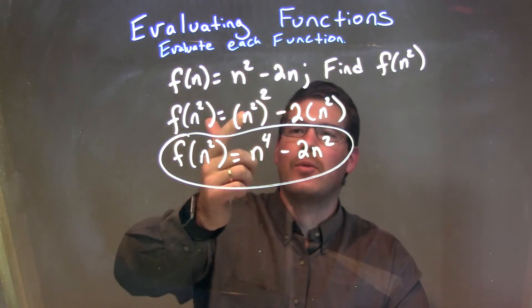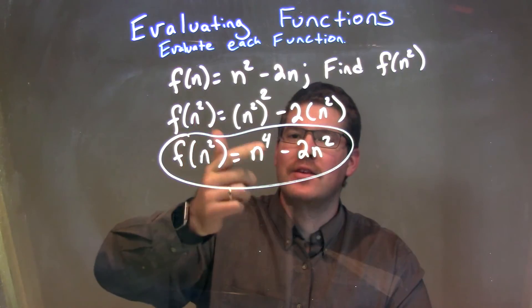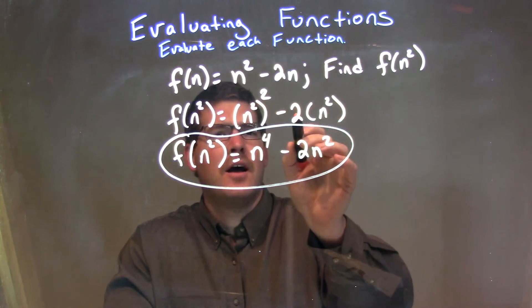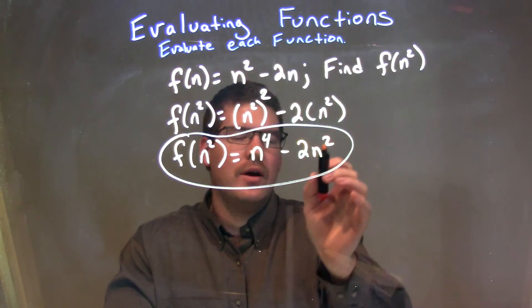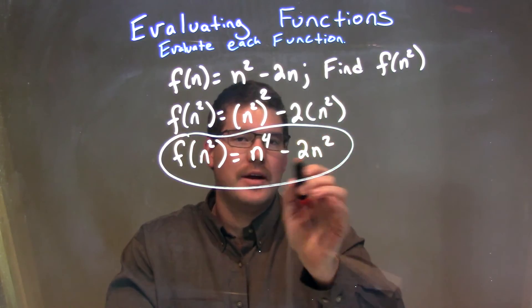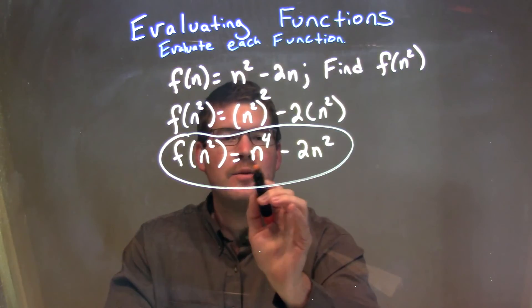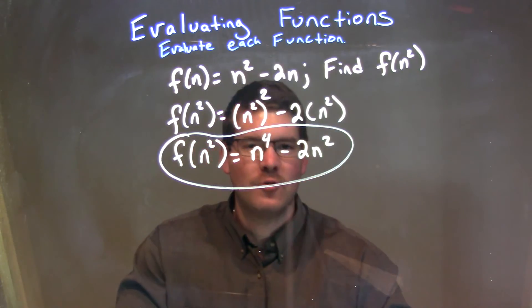Simplify that. n squared all to the second power is n to the fourth power. Then we multiply 2 times n squared and get minus 2n squared right here. So again, our final answer is f of n squared equals n to the fourth minus 2n squared.